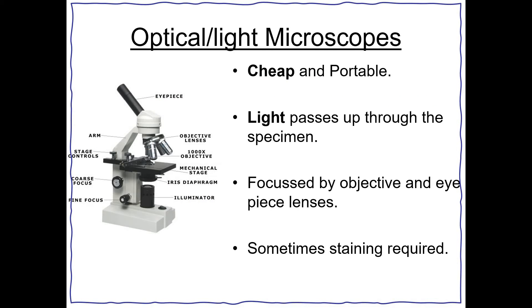Optical or light microscopes are cheap and portable. Light passes through the specimen - it passes up through the illuminator, through the slide, and is then focused by the objective lens and the eyepiece lens. In schools, you usually have times 4, times 10 and times 40 objectives, and the eyepiece lens is usually times 10. You might need to stain the specimen so that you can see it more clearly - for example, with an onion cell you'd stain it with iodine.